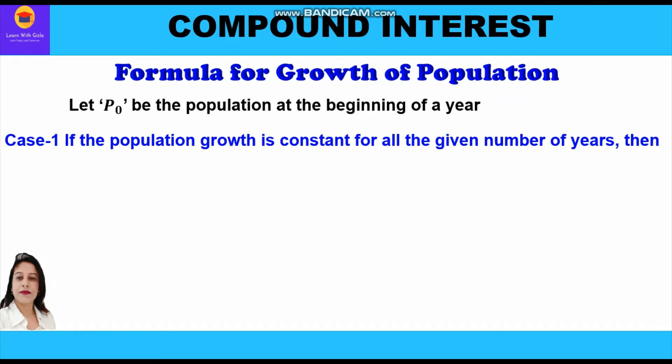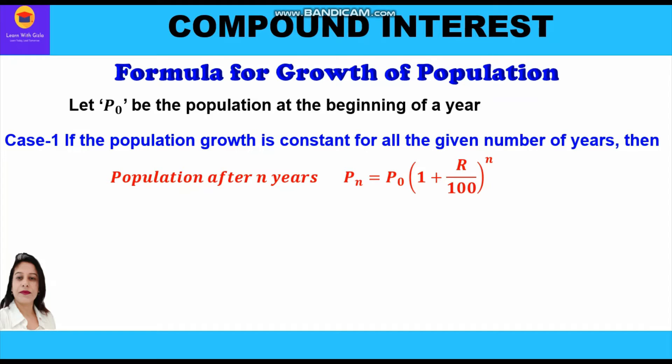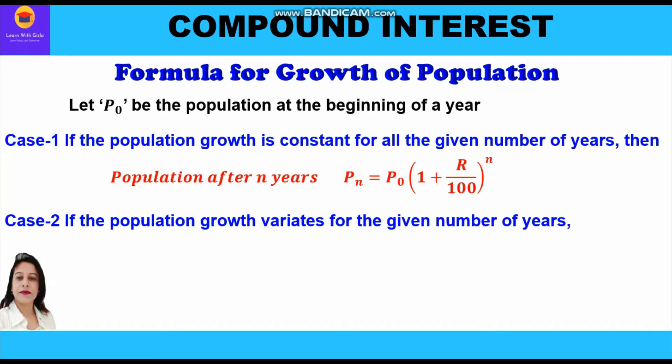Case one: if the population growth is constant for all the given number of years, then the population after n years is given by the formula Pn = P0 × (1 + r/100)^n, where Pn is the population after n years, P0 is the initial population, r is the constant rate of growth, and n is the number of years.